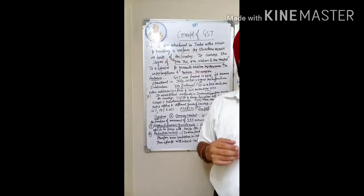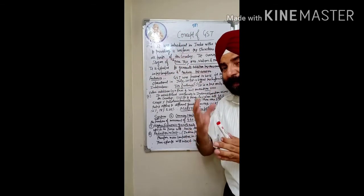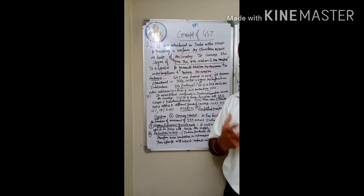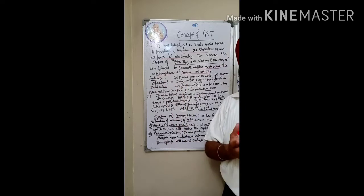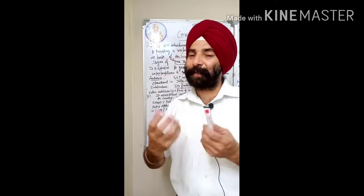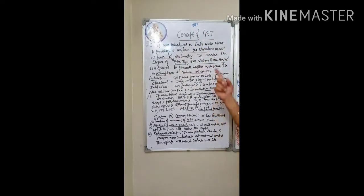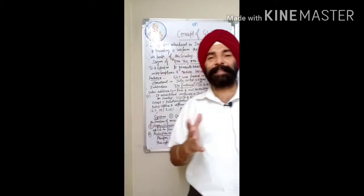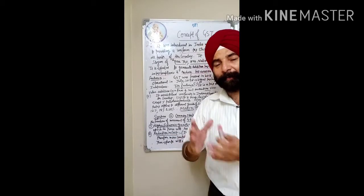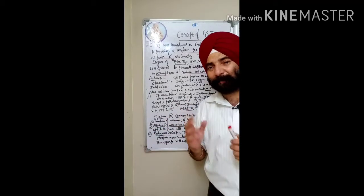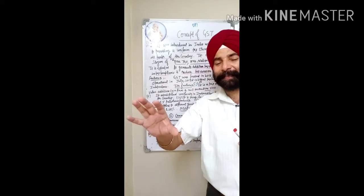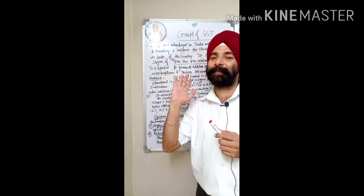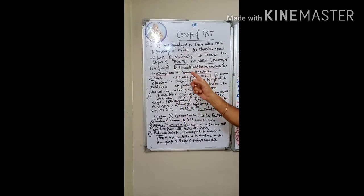GST ko introduce karne ke peeche government ki mansha thi ki jab GST ka ek daayra hoga toh usme maximum goods cover hogi aur wahan se bahut saara paisa aayega. Doosra, tax compliance badhegi kyunki jab sab uss GST ke daayare mein aa jaayenge toh sabko maloom hoga ki unhe apna tax pay karna hai. Teesri khaas baat yeh thi ki tax evasion — tax ki chori — khatam ho jaaye.